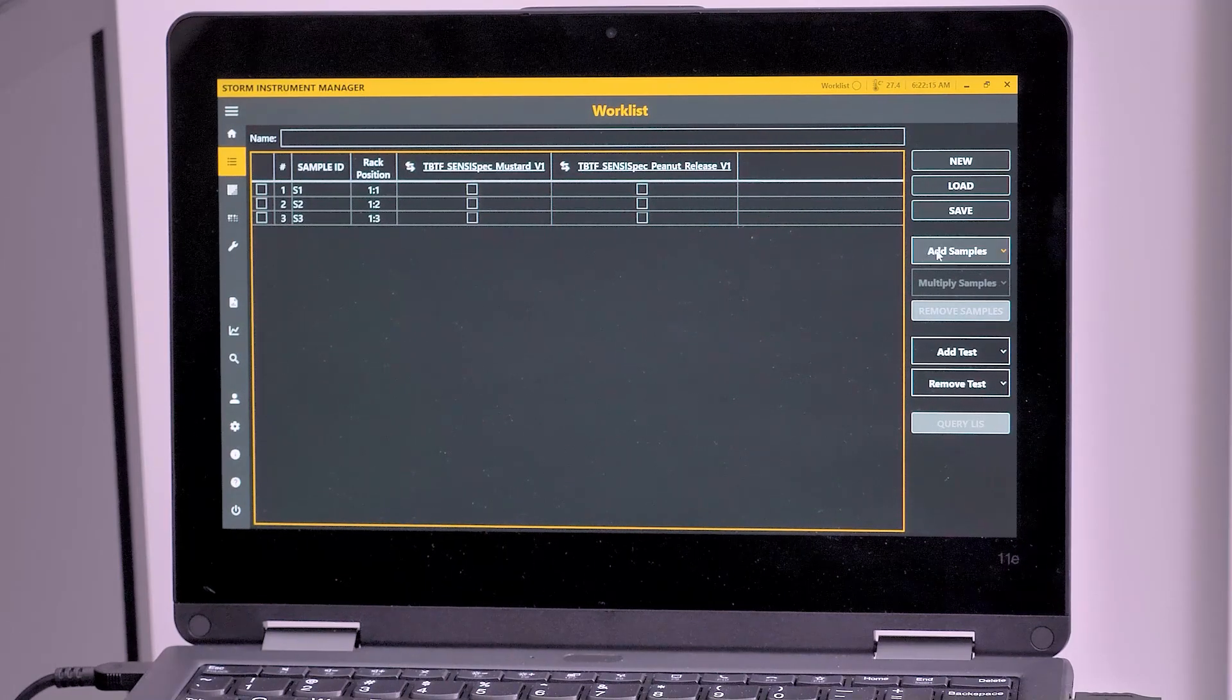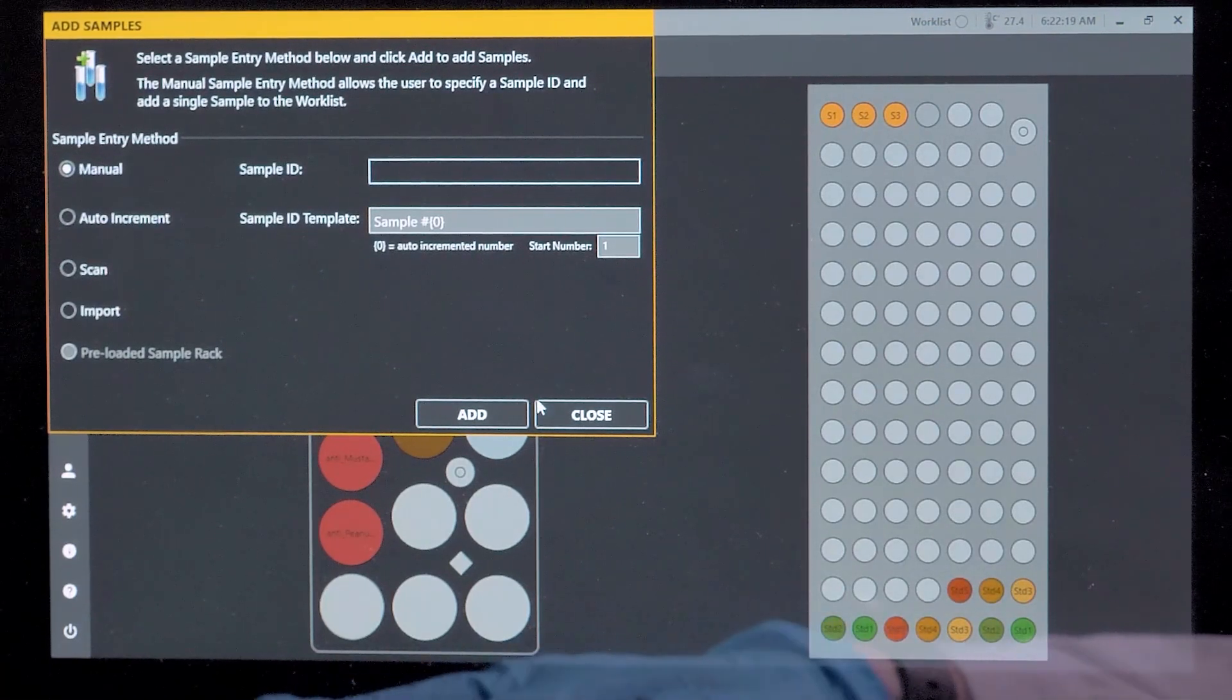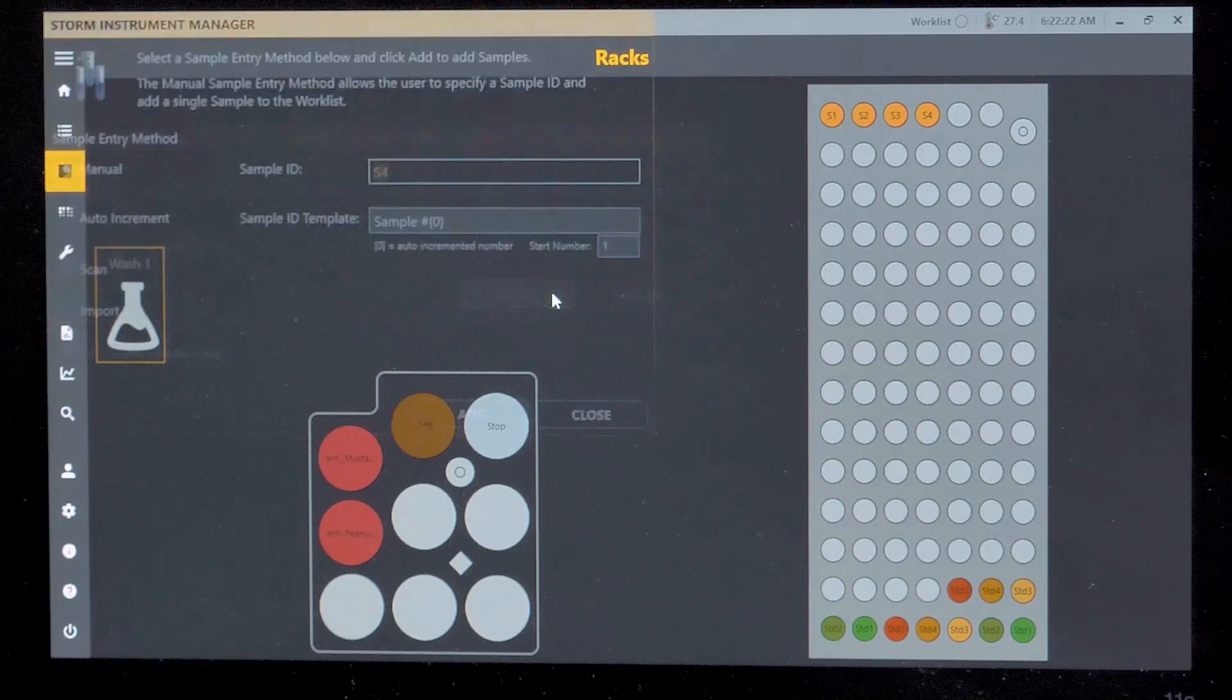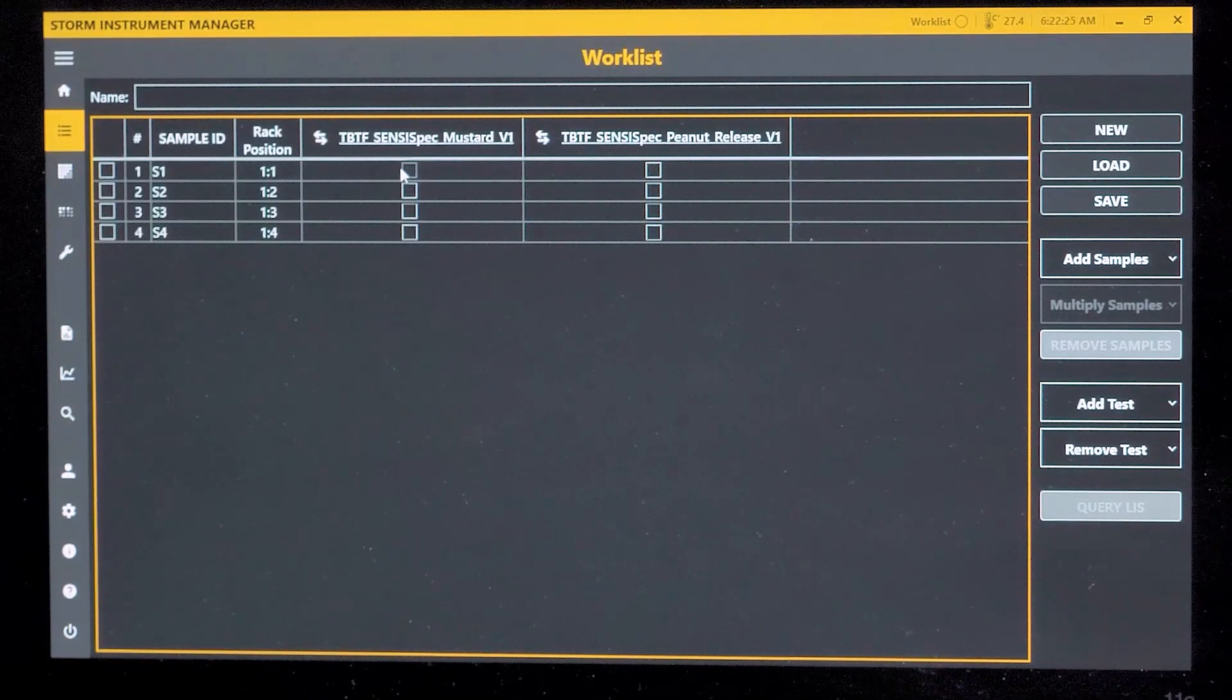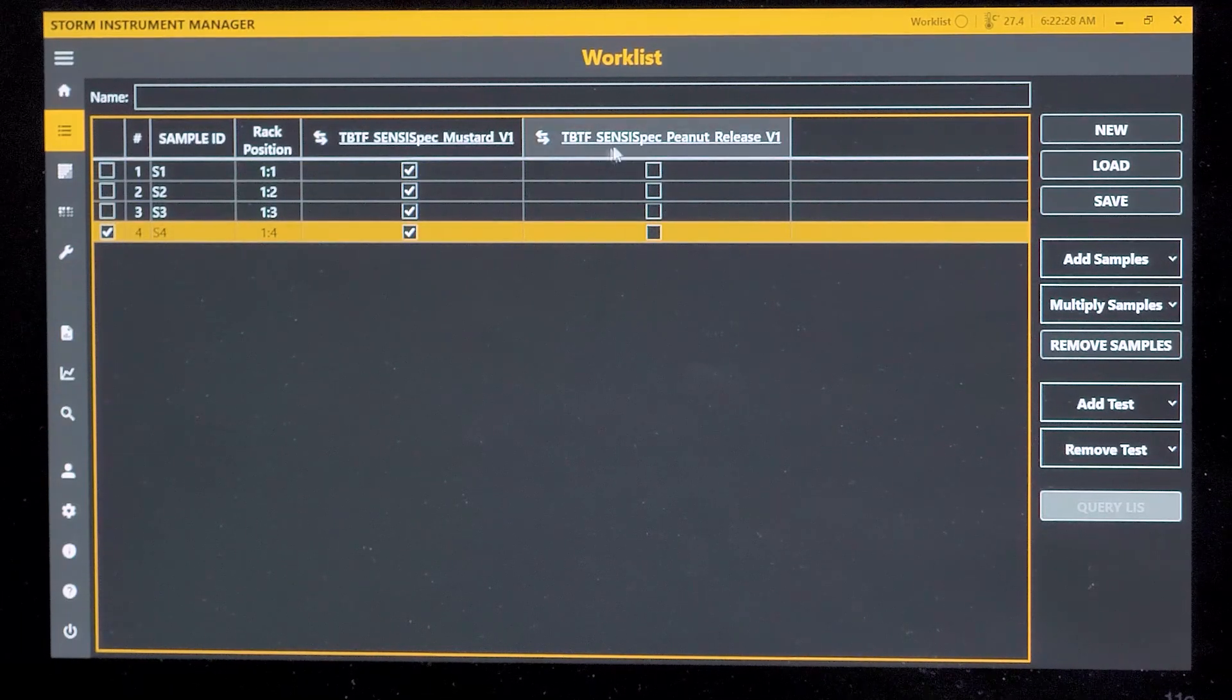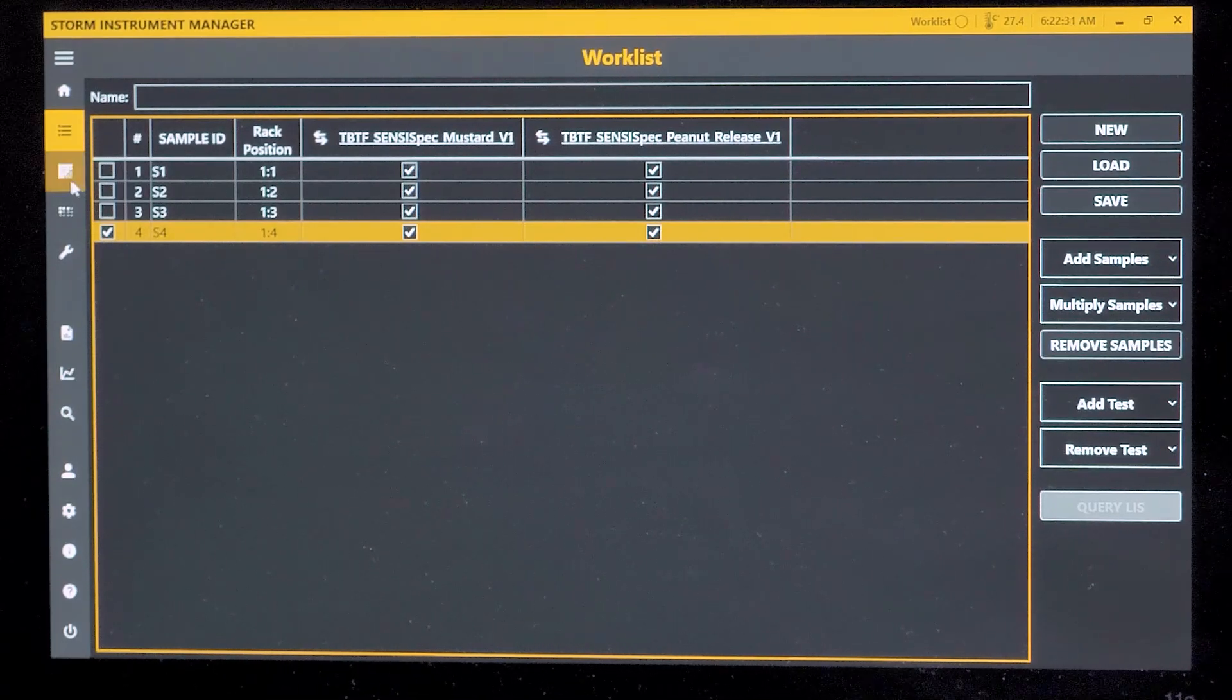SensiSpec kits are designed for a large number of matrices and are already validated for automated application using the Bolt. The laboratory technician only has to extract the samples while the machine handles the execution of the tests, one following the other, without any intermediate manual intervention.